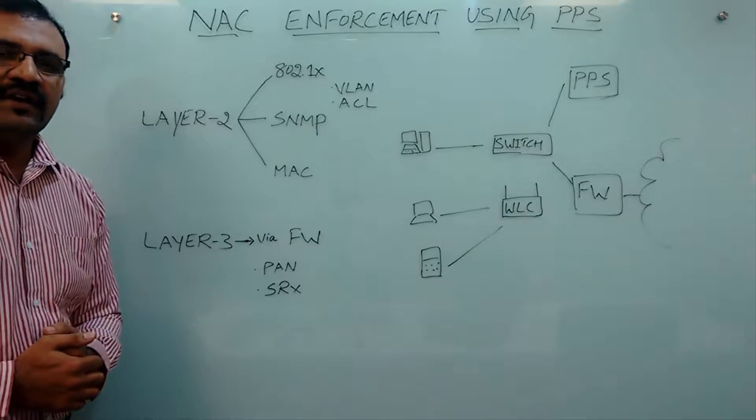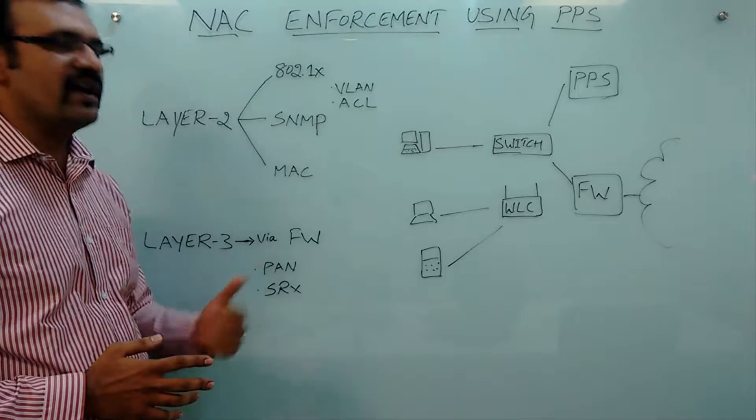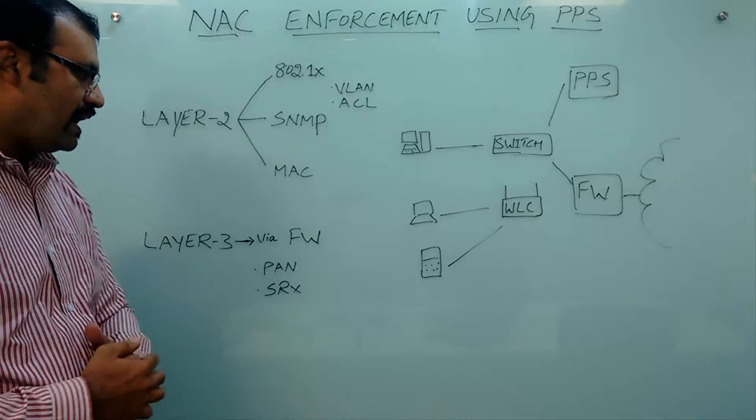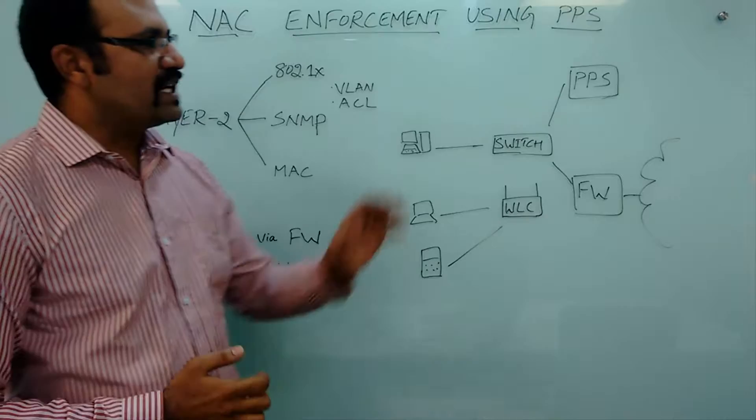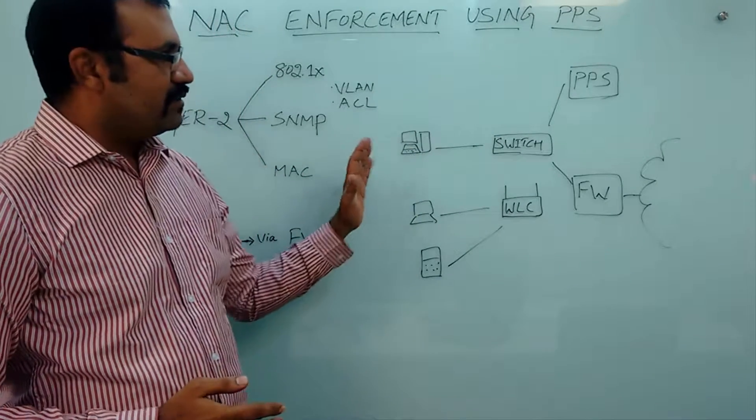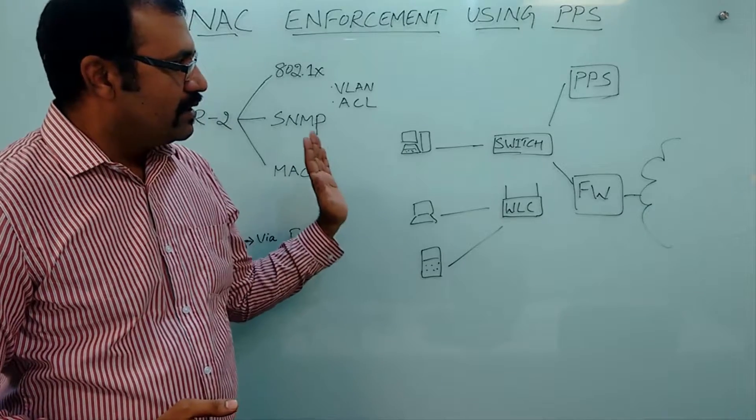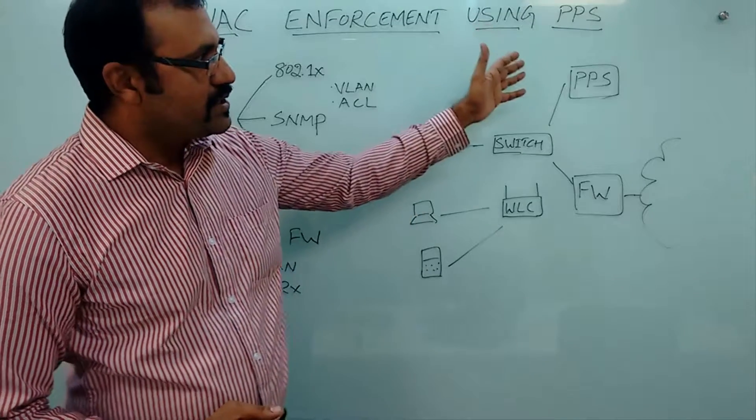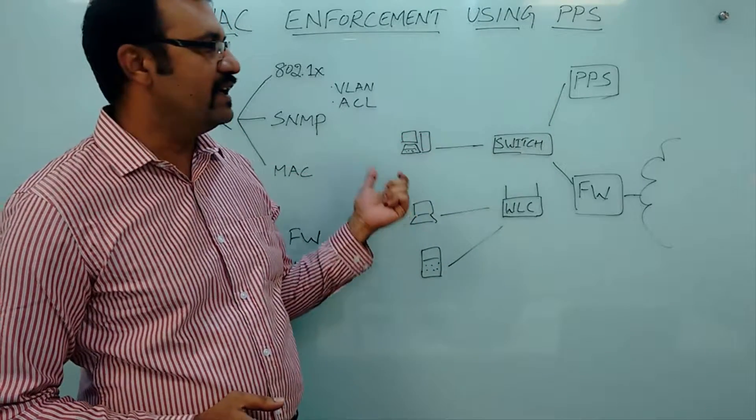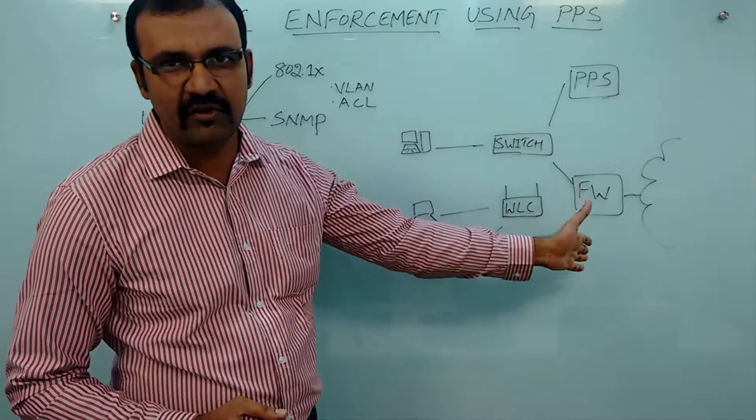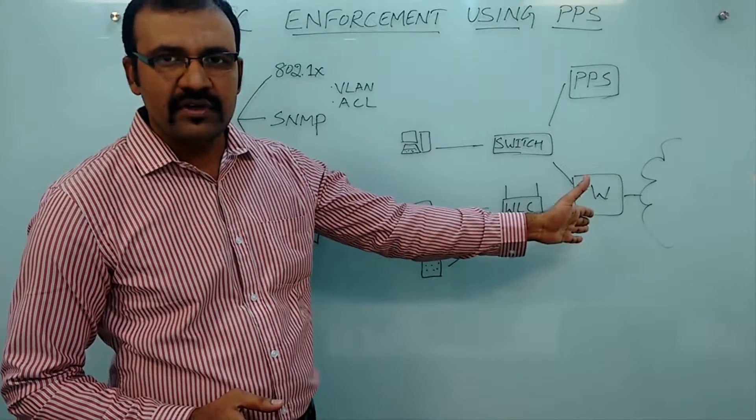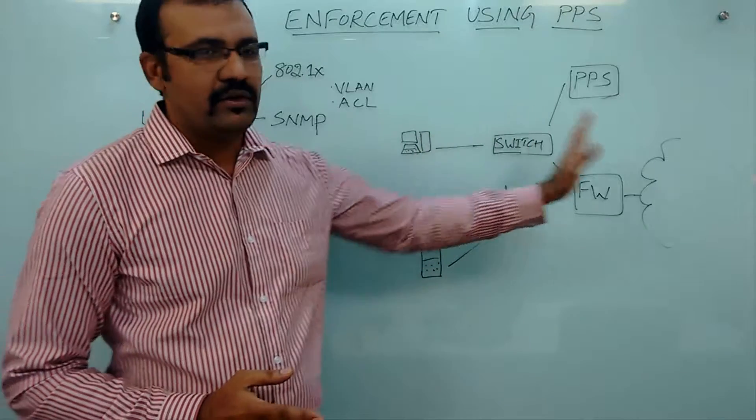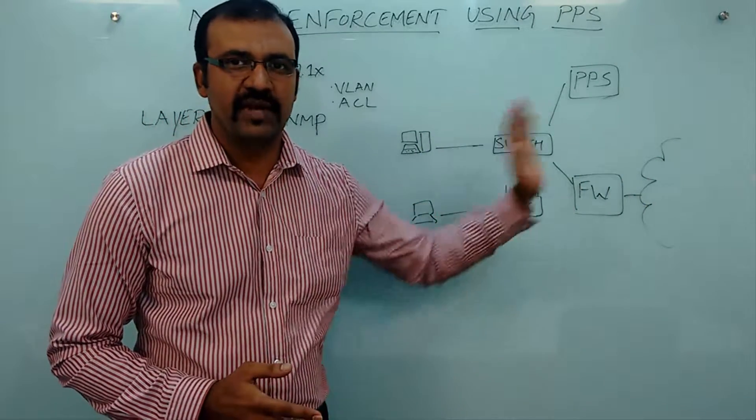Coming to the layer 3 enforcement method, which is via firewalls. We support leading firewall vendors such as Palo Alto Networks and Juniper SRX. Pulse Policy Secure authenticates endpoints and applies security policies. It also shares session details like end user identity and IP address to the integrated firewall to further apply control on endpoints and block access to protected resources behind the firewall.